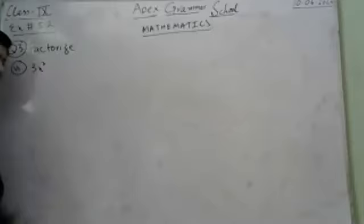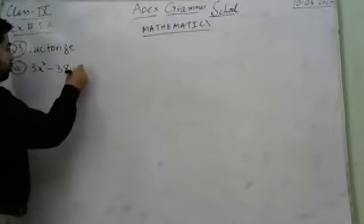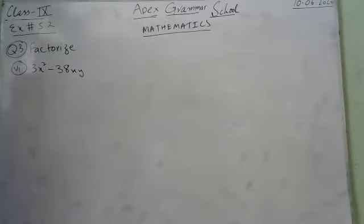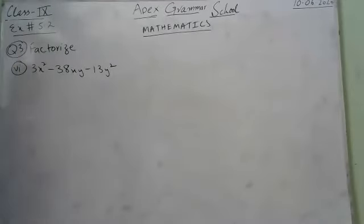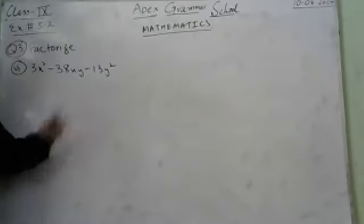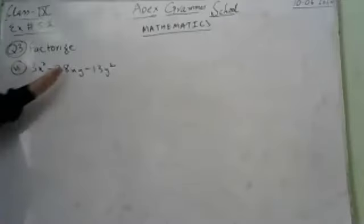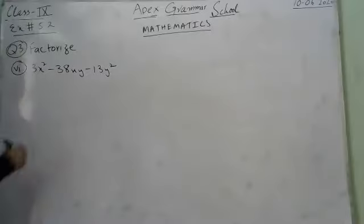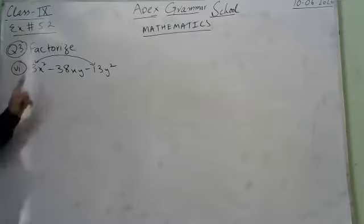The expression is 3x² minus 38xy minus 13y². First we check if anything is common — nothing is common here. So we apply mid-term breaking. For that, we multiply the first coefficient 3 with the last coefficient minus 13, giving us minus 39.